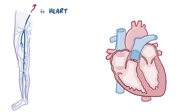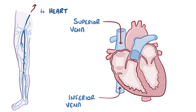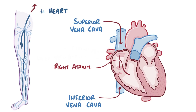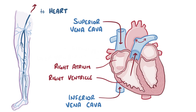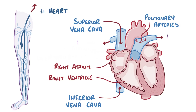Ultimately, all of the blood ends up in the superior or inferior vena cava and dumps into the right atrium. From there, the blood goes into the right ventricle and gets pumped into the pulmonary artery, and eventually to the lungs.